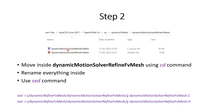The .C and .H file names also need to be changed, and everything inside them must be updated as well. We can rename everything inside using a sed command. These are the two commands: dynamicRefineFvMesh will be changed to dynamicMotionSolverRefineFvMesh — every instance of that name inside the files will be replaced. The sed command is really helpful for this.